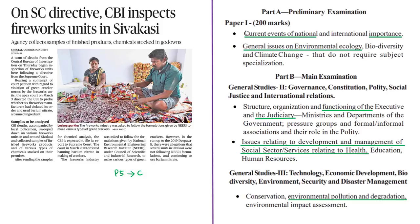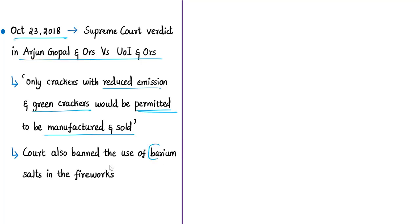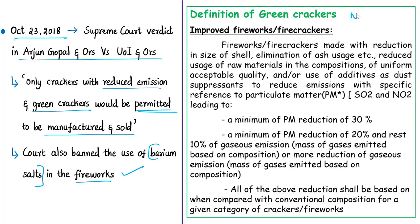The next news article is about the enforcement of a Supreme Court order with respect to fireworks manufacturing units. The court's verdict dealt with green crackers and the use of barium salts in the production of firecrackers. In October 2018, the Supreme Court gave a verdict in Arjun Gopal and Others versus Union of India and Others, ordering that only crackers with reduced emissions — green crackers — would be permitted to be manufactured and sold, and also banning the use of barium salts in fireworks.